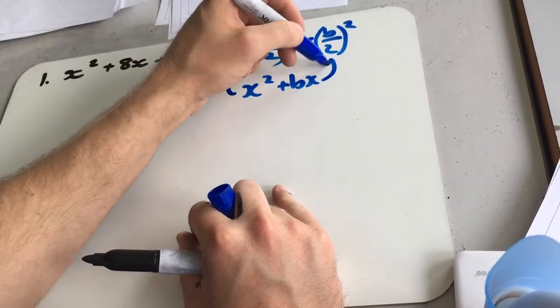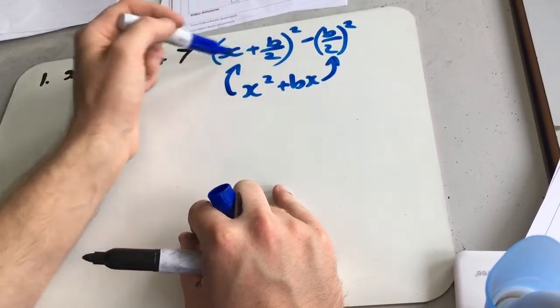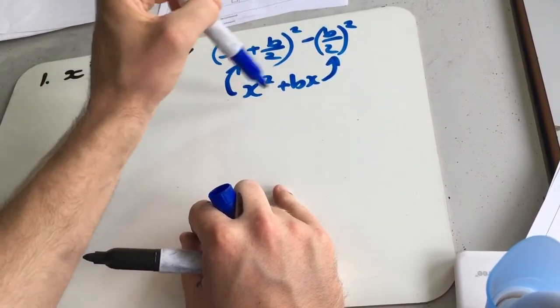So it's a different way of writing x squared plus bx in this form. And if you expand this, you'll end up with this again.